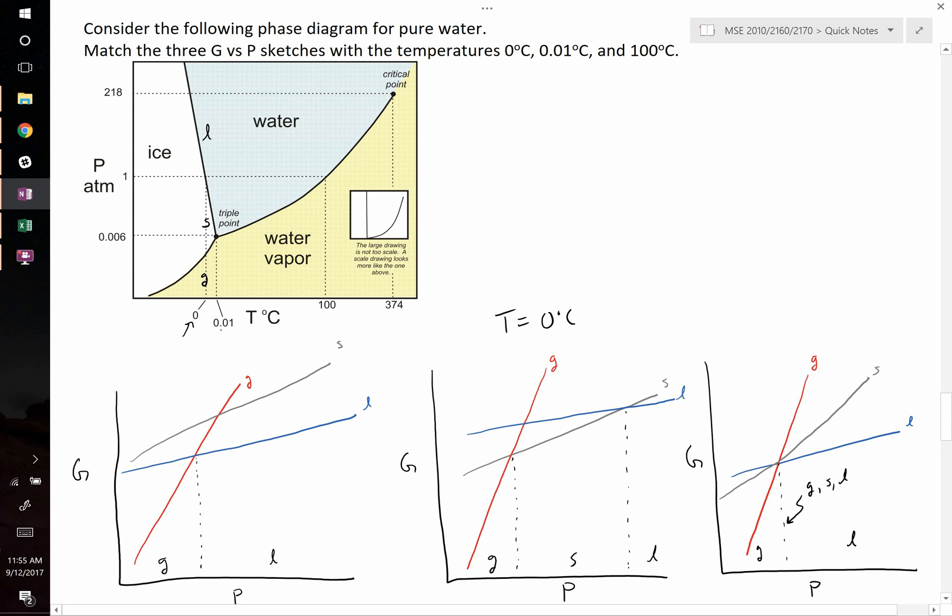Now let's do 0.01. At 0.01, you go from a gas to a liquid, but you do have this triple point where you have all three phases in equilibrium. So this must be temperature equals 0.01 degrees Celsius.